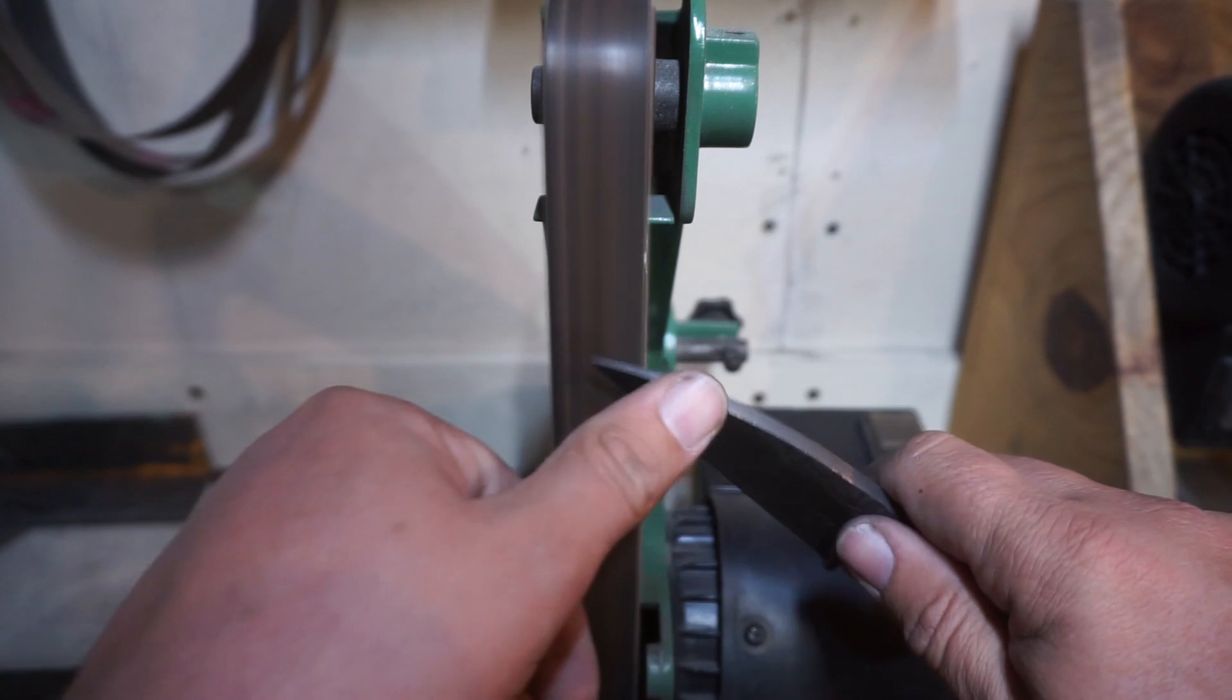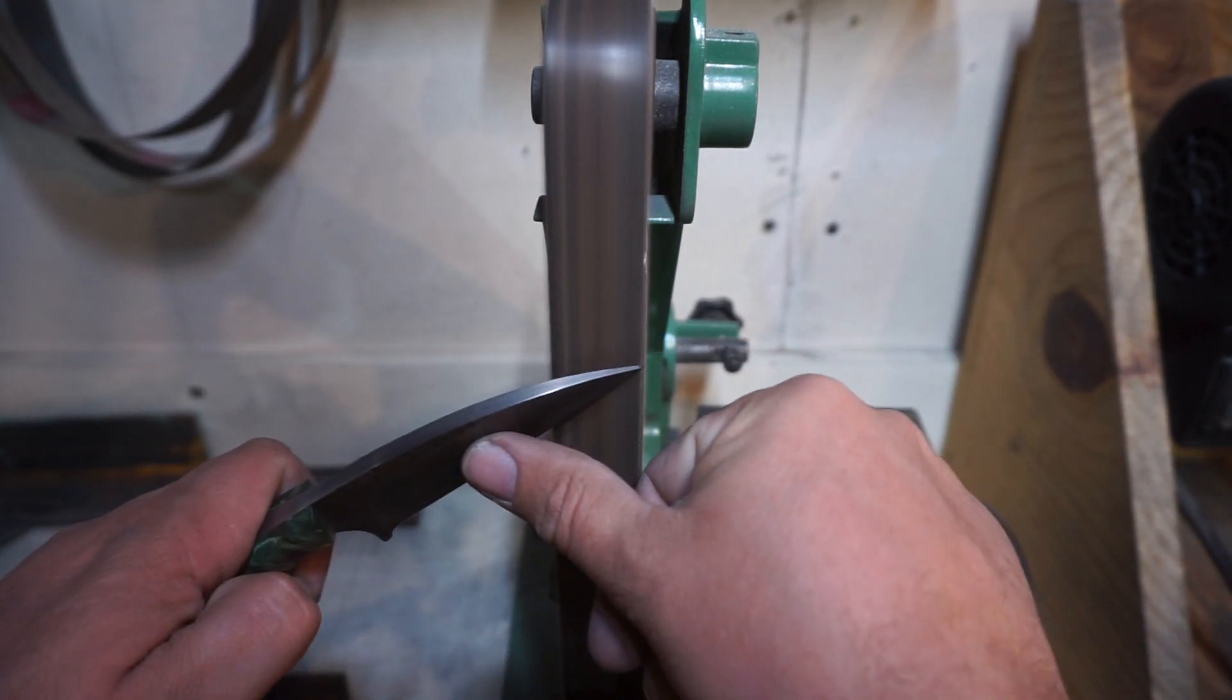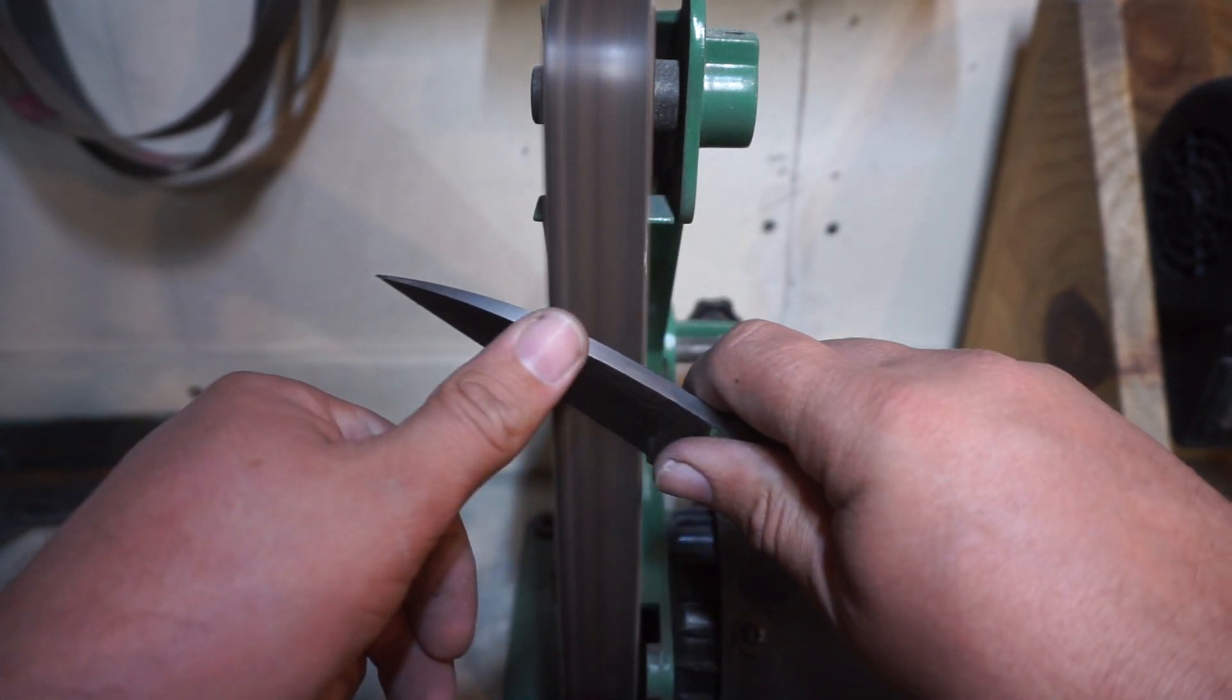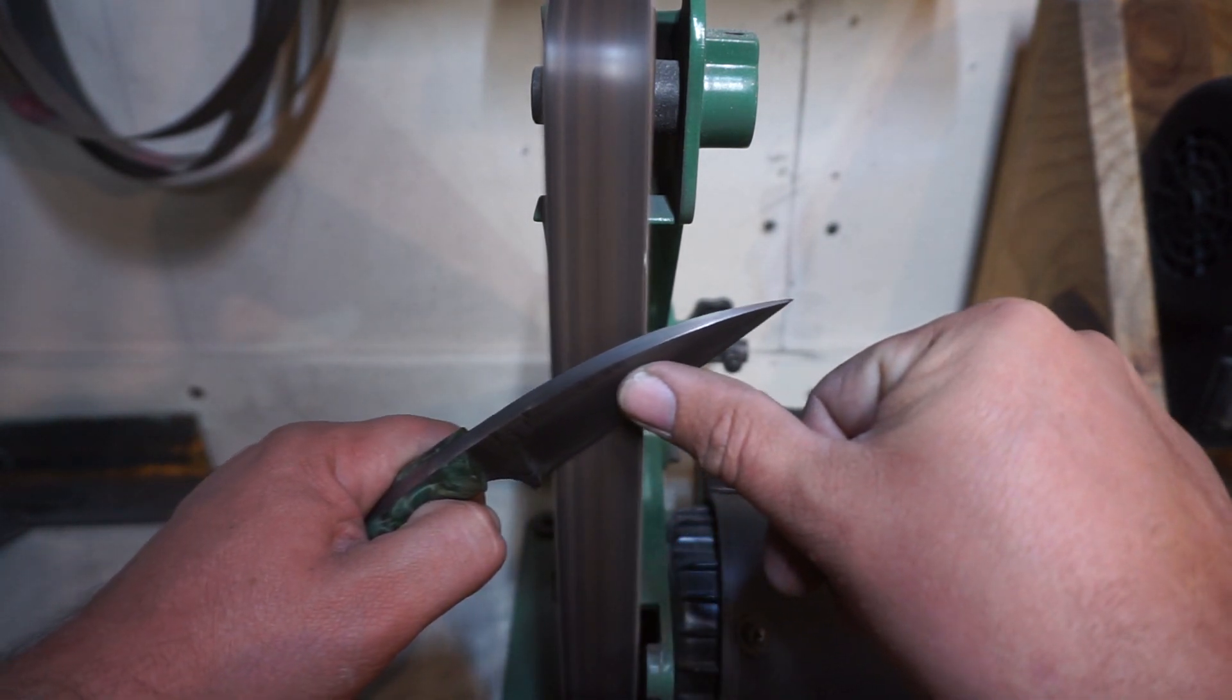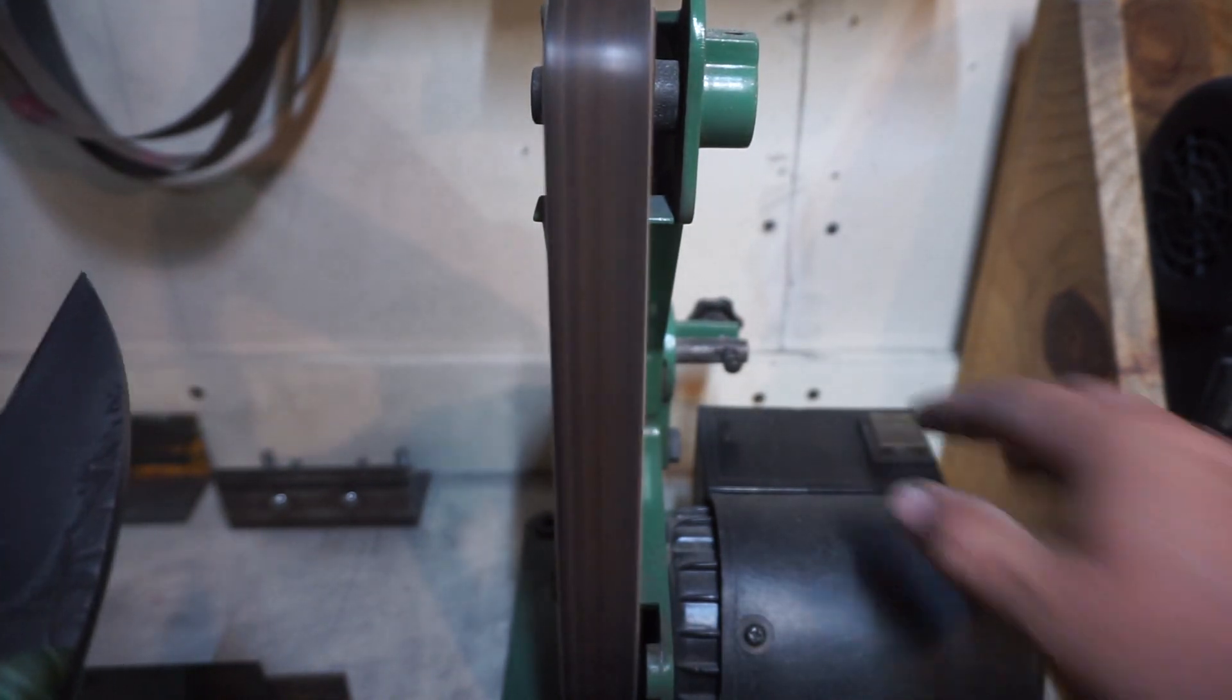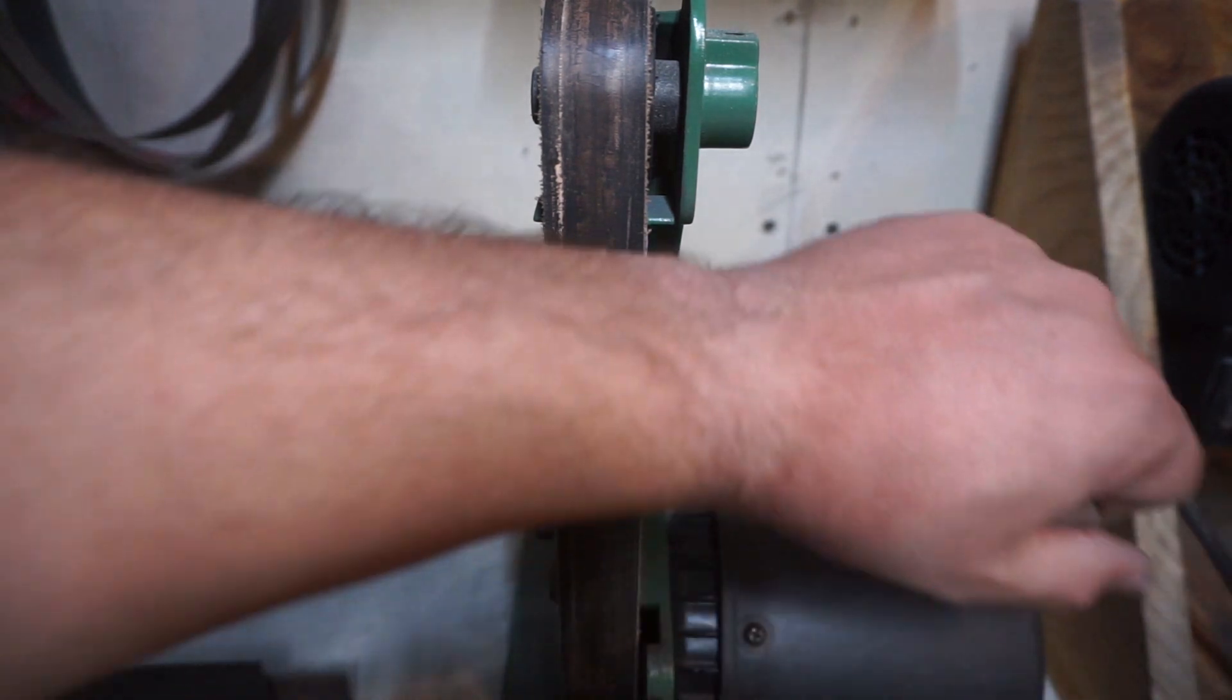Now we're going to use the leather stropping belt on the 1x30 and just knock that burr off and leave our razor sharp edge. This makes everything a lot easier than having to hand strop or do any of that. I love this belt.